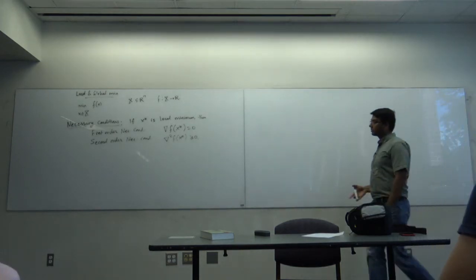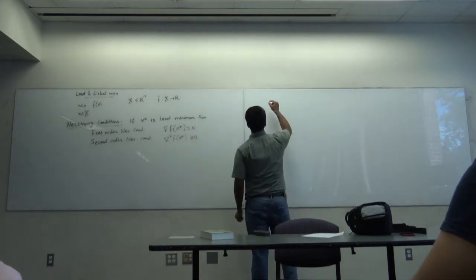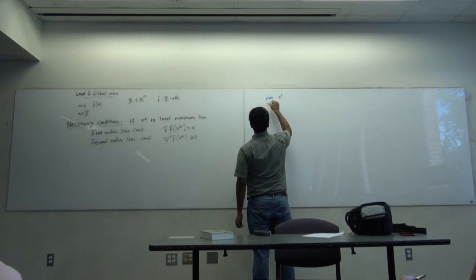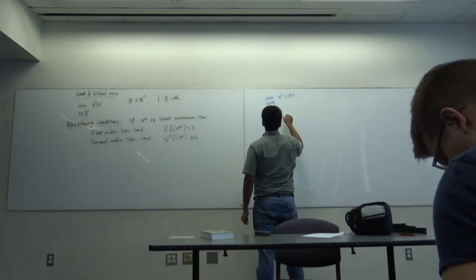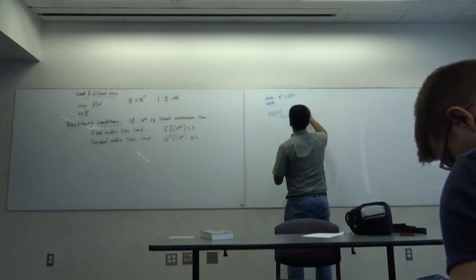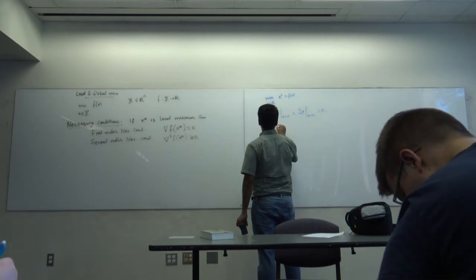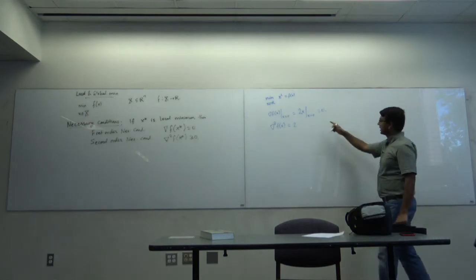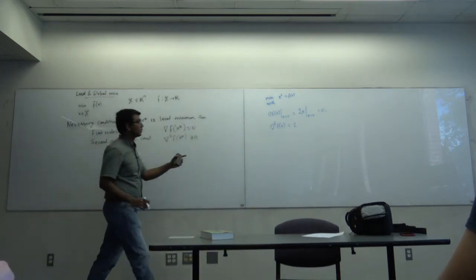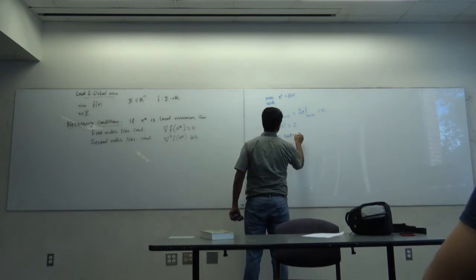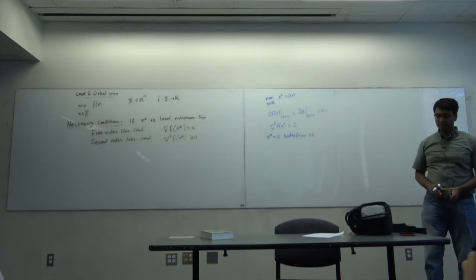Let's do an example to see whether these conditions are satisfied. I want to minimize x² over x in R. The gradient of f(x) at x=0 is 2x evaluated at 0, which equals 0. The second derivative is 2, which is positive — certainly greater than or equal to 0. So x*=0 satisfies both the first order and second order necessary conditions.